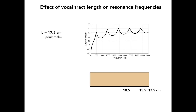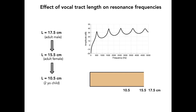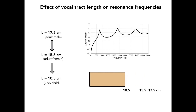All of the examples shown thus far have been based on a vocal tract length of 17.5 cm, which is a typical length of an adult male vocal tract. For comparison, a typical length of an adult female vocal tract is about 15.5 cm, whereas a 2-year-old child has a vocal tract that is about 10.5 cm long. This animation shows the frequency response function of the uniform tube as the length is shortened from 17.5 cm to 10.5 cm. As can be observed, the shortening of vocal tract length systematically increases the frequency of each resonance.